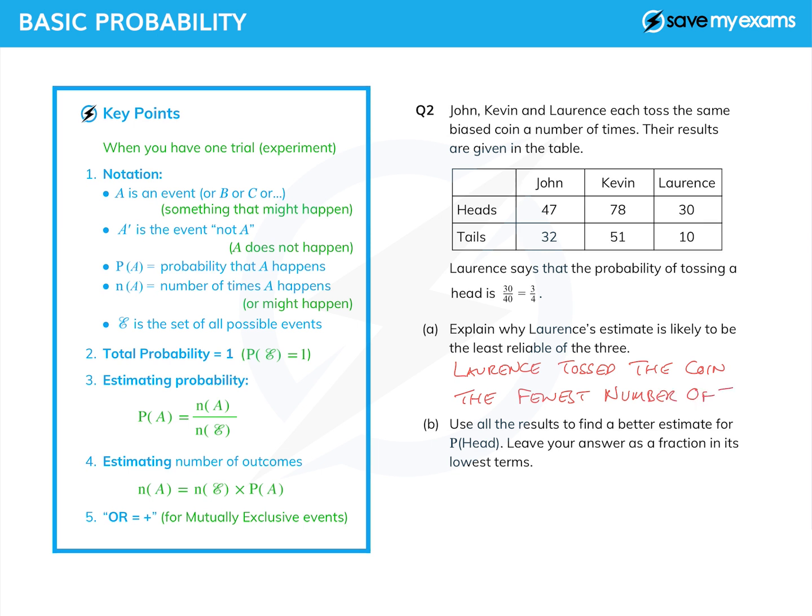Right, now, what about part B? It says, use all the results to find a better estimate for the probability of a head. And we're asked to leave our answer as a fraction in its lowest terms. So let's do that. Now, here's the one thing we haven't used yet, estimating probability. The probability that something happens is the number of times it can happen over the number of times that anything happens.